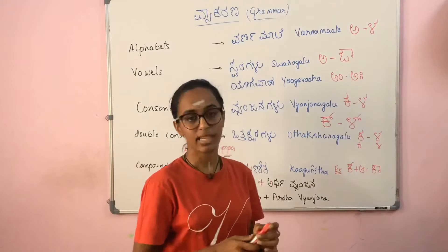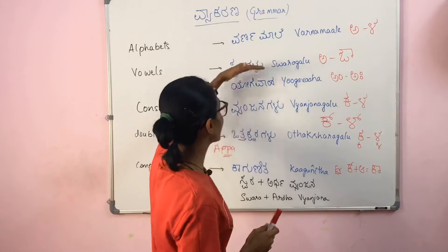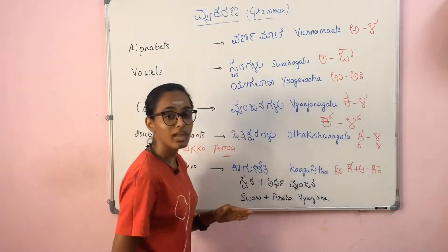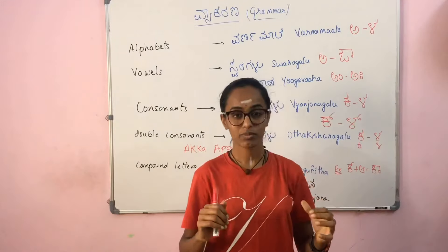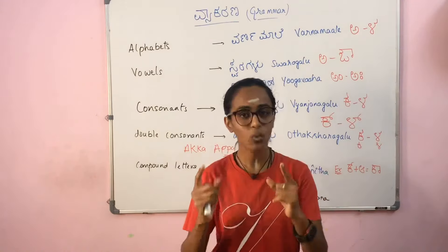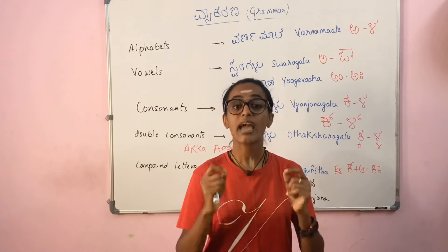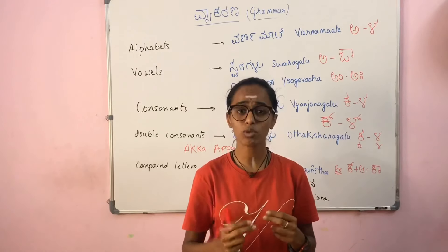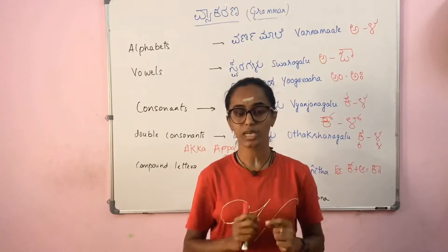Next is gunitakshara, also called kagunita. As mentioned, a vyanjana will combine with a swara — swara plus ardhvyajana together form kagunita, which is a purna vyanjana. So gunitakshara or kagunita is the combination of a swara and an ardhvyajana to form a complete consonant unit.